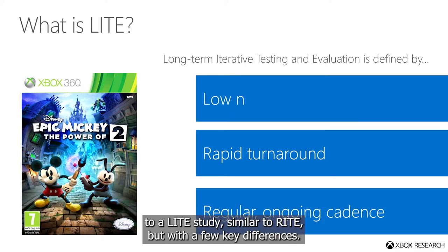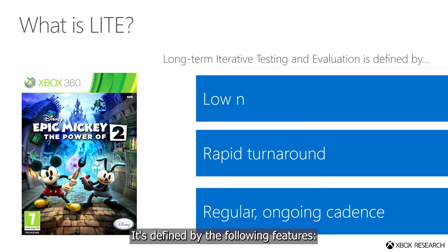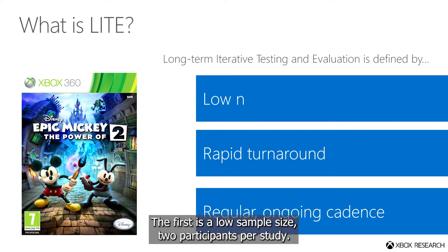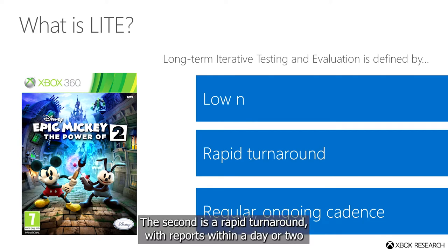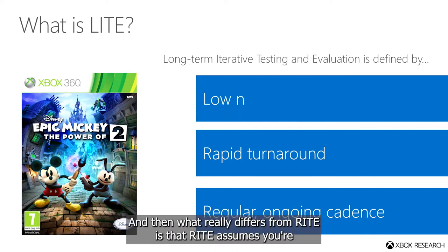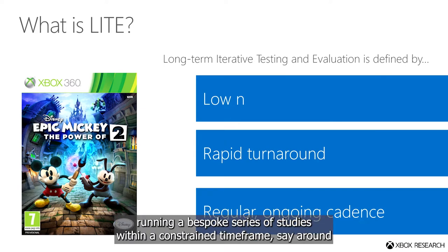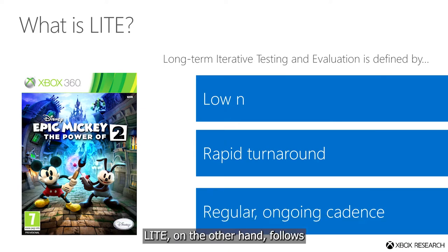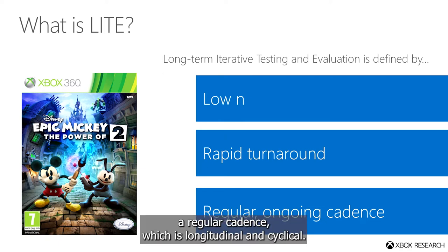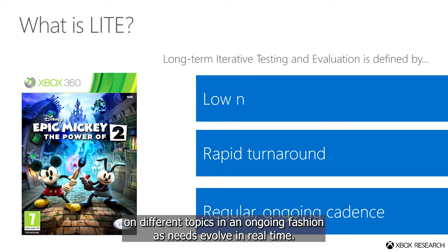Now let me introduce you to a LIGHT study — similar to RITE, but with a few key differences. It's defined by the following features: the first is a low sample size, two participants per study. The second is a rapid turnaround, with reports within a day or two following a study. Where it really differs from RITE is that RITE assumes you're running a bespoke series of studies within a constrained timeframe, say around two weeks. LIGHT, on the other hand, follows a regular cadence, which is longitudinal and cyclical. It's designed to iterate on different topics in an ongoing fashion as needs evolve in real time.